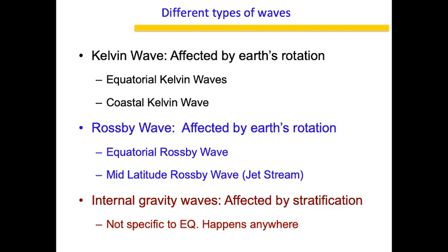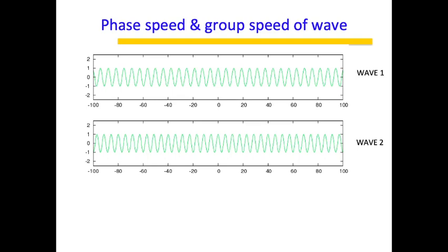Then you have the Rossby wave, which is also affected by Earth's rotation. You have the equatorial Rossby wave and the mid-latitude Rossby wave — the mid-latitude Rossby wave is nothing but the jet stream, which is a fast-moving perturbed stream of air in the middle atmosphere. And you have internal gravity waves — these are special types of waves not affected by rotation, but affected by stratification, which is the density gradient present in the atmosphere. Internal gravity waves are not specific to the equator; they can occur anywhere, even at 5, 10, or 15 degrees latitude.